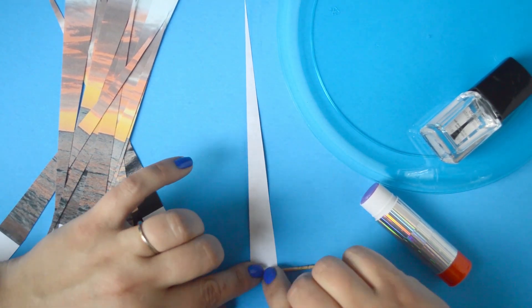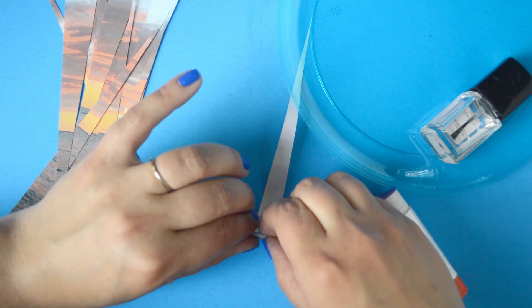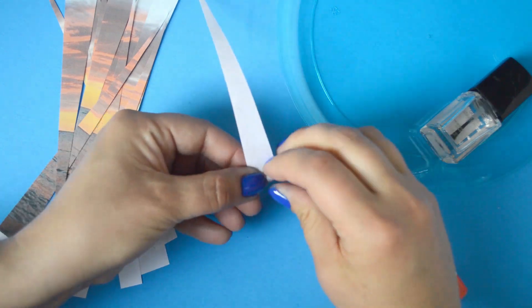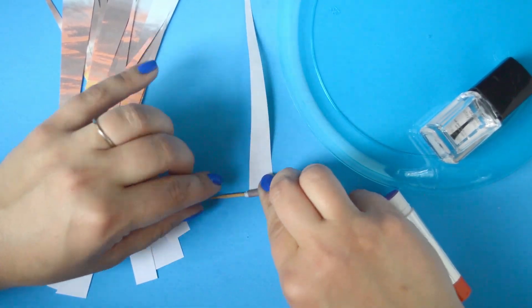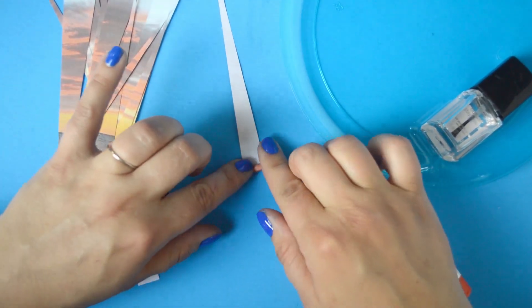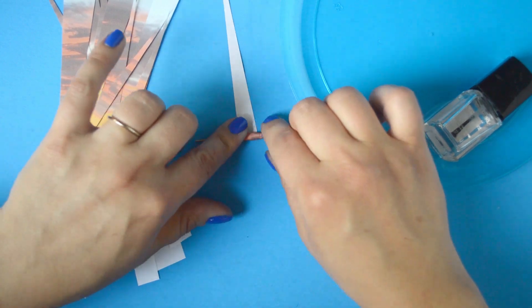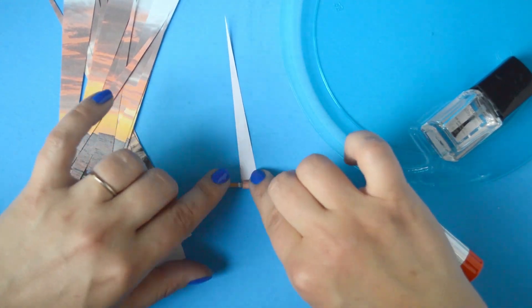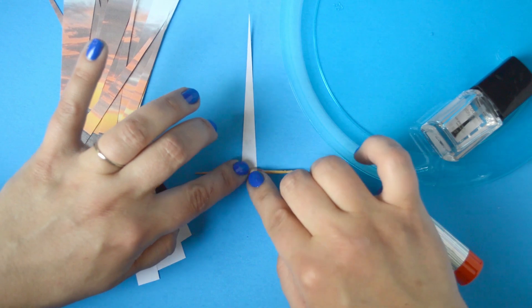Begin on the widest end of your triangle. Tightly roll up the triangle of paper into a roll. You can see that I added just a little bit of glue from a glue stick that will help the beads stay together as you're rolling it up and help it adhere it all together before you get the sealant on it.